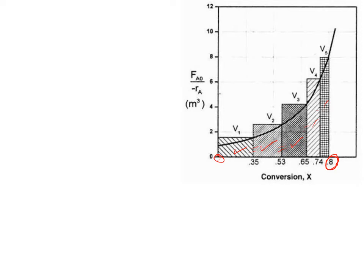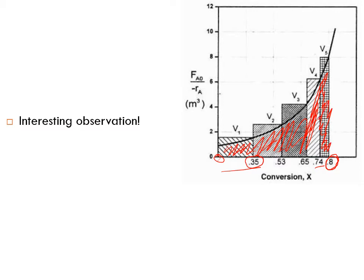Different CSTRs take you to different conversions because the rate of reaction at each CSTR is different. For example, the first CSTR takes you up to about 35% conversion, while the last CSTR takes you from a conversion of 0.74 all the way to 0.8 — only 0.05 conversion, compared to 0.35 for the first. Yet they all have equal volumes. When you compare all these CSTR areas to the area under the curve for one plug flow reactor, they are almost identical.